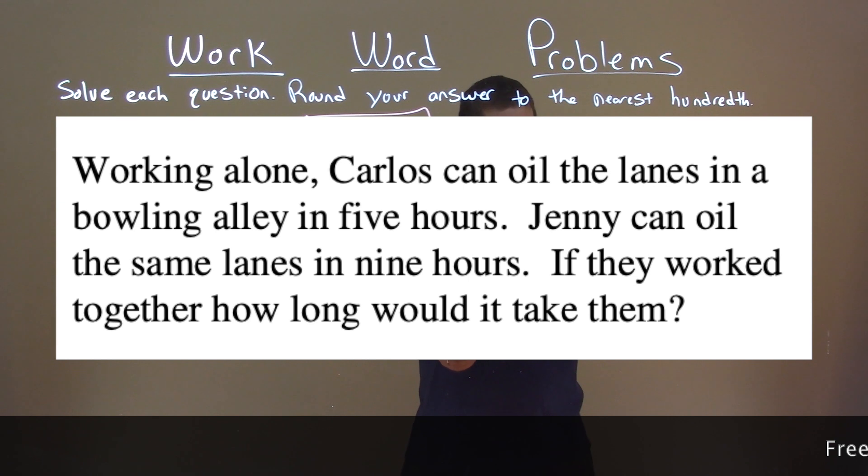Working alone, Carlos can oil the lanes in a bowling alley in five hours. Jenny can oil the same lanes in nine hours. If they work together, how long would it take them?